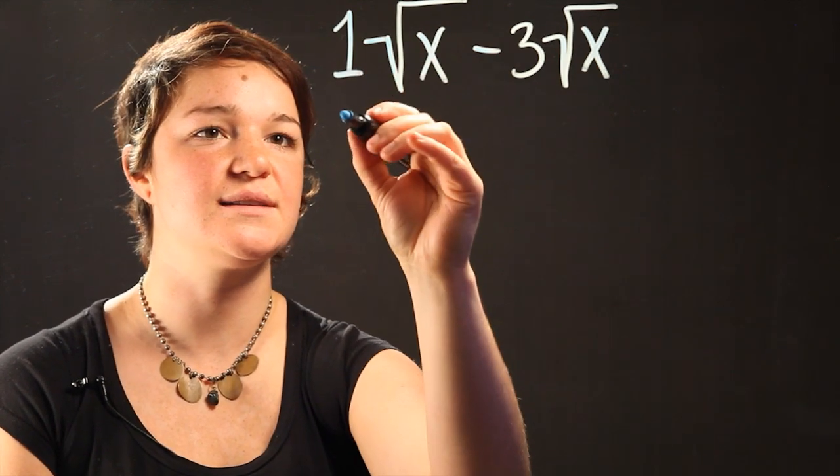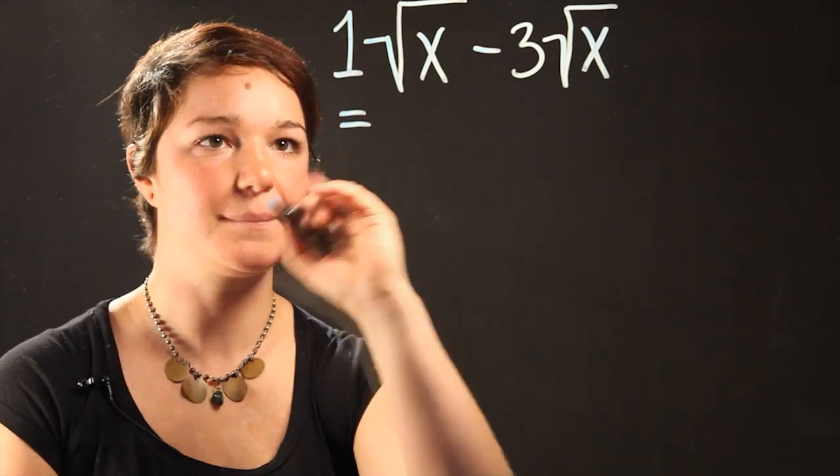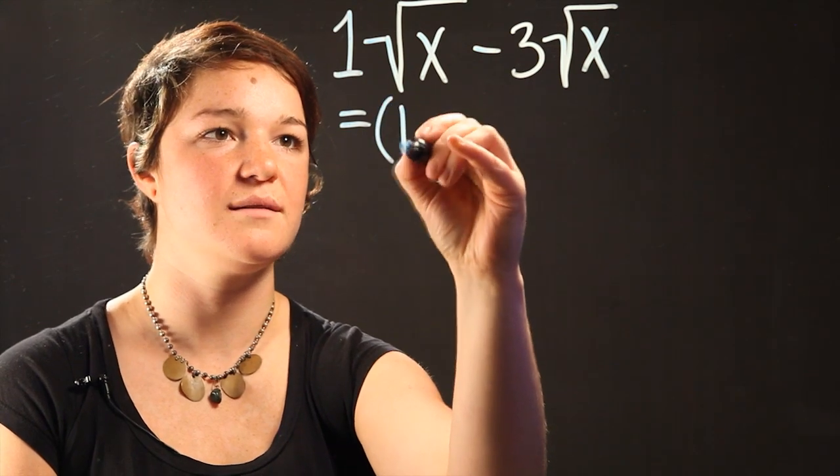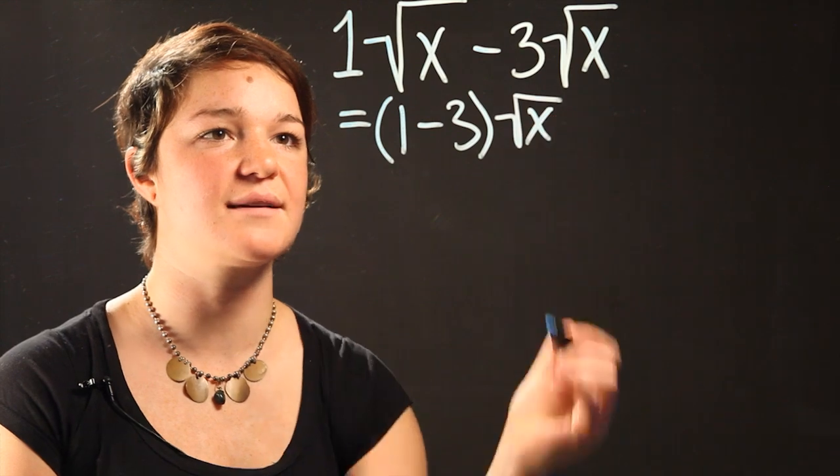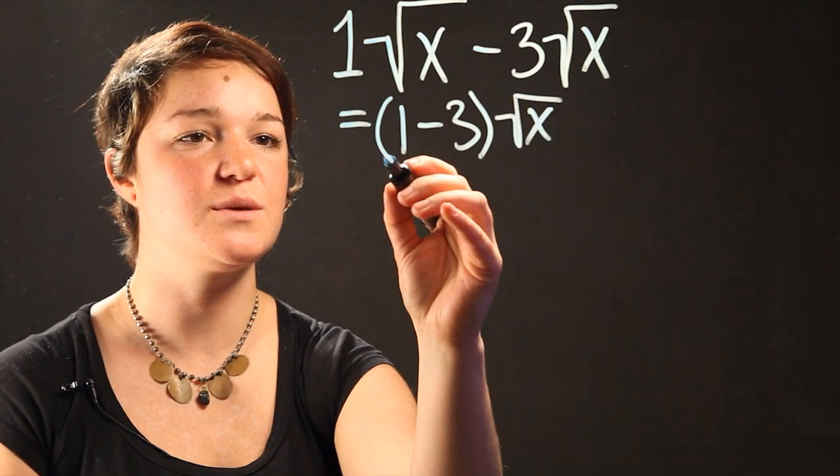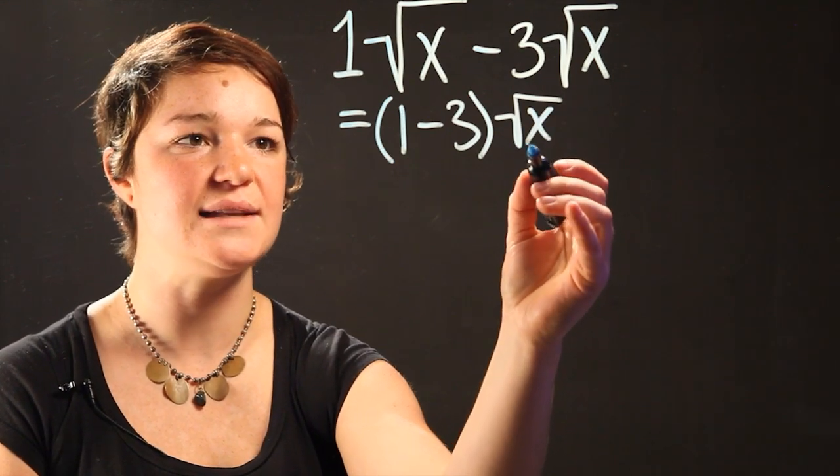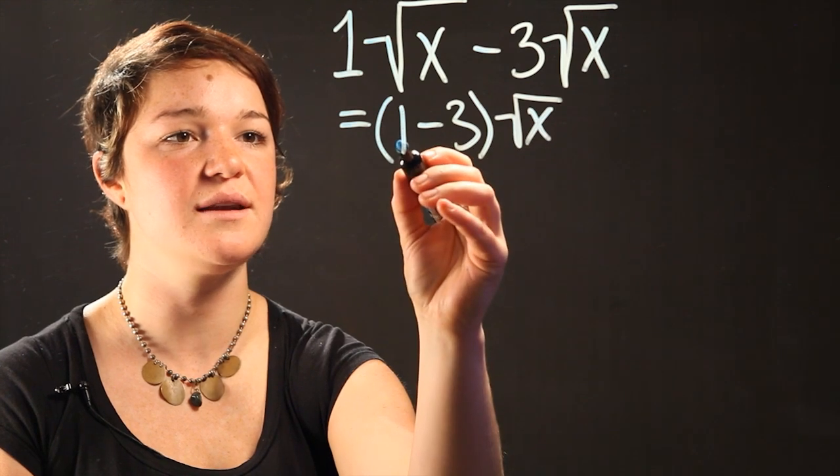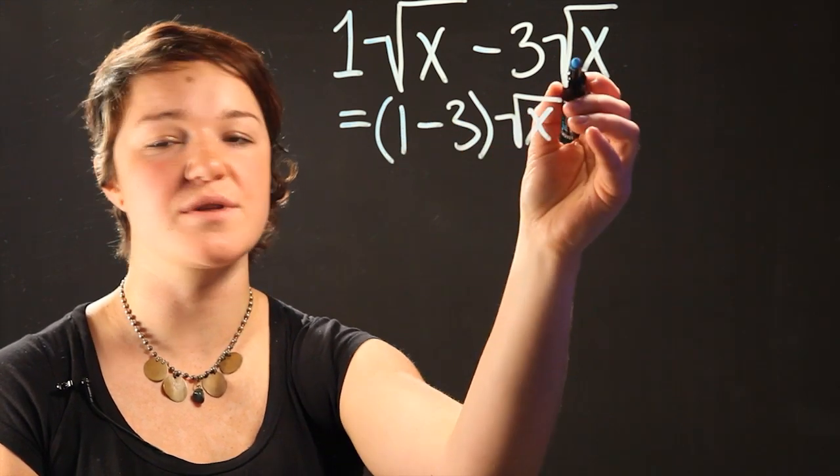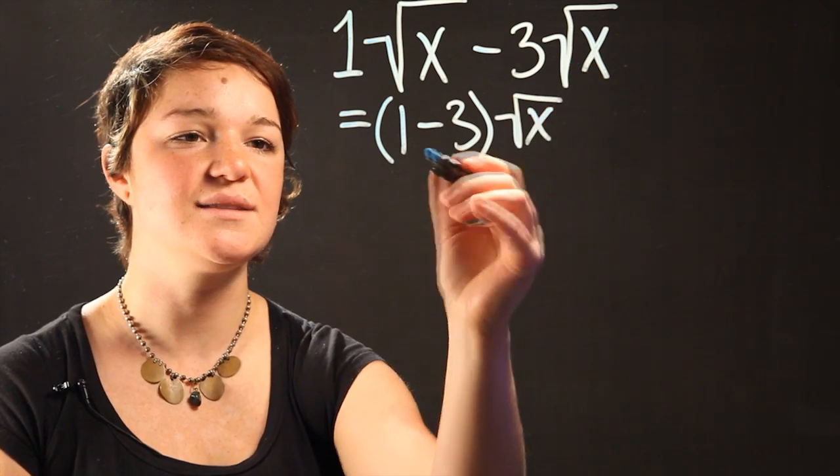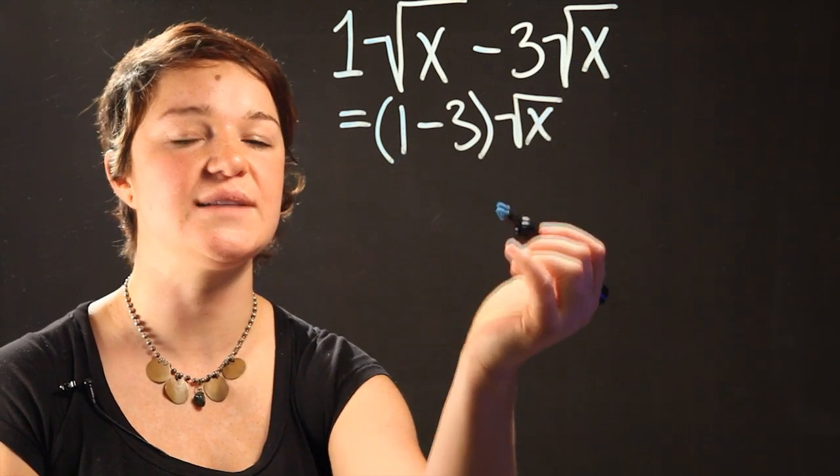So this expression is the same as saying 1 minus 3 times radical x. Because when you do the order of multiplication, what you get is radical x times 1 minus 3 times the radical x, or the original expression. This is just an easier way to see how we can simplify it.